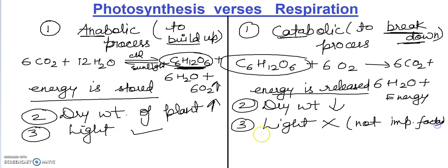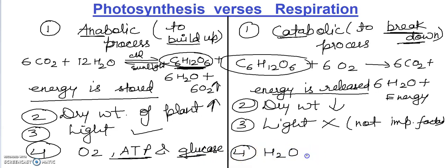And if we talk about the last point here, students, photosynthesis: here the end products are oxygen, ATP, and glucose. Here we are making ATP synthesis, we are making glucose. In respiration we are making water, energy is released, and CO2. CO2 release. And here we are making energy store in the form of ATP. Energy is released and it is stored in the form of ATP molecules.